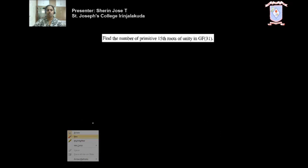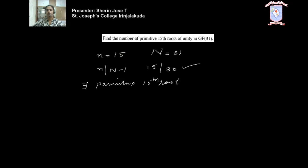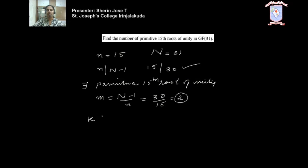Let us do one more problem. Here n is equal to 15 and capital N is equal to 31. The first step: does n divide n minus 1? Here 15 divides 31 minus 1, which is 30 — yes, 15 divides 30, so that is true. The first step is satisfied, so primitive 15th roots of unity definitely exist. Now find m equal to (n minus 1) divided by n, which is 30 divided by 15, equal to 2. So the value of m is 2.